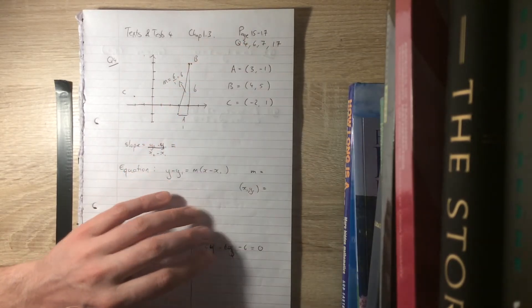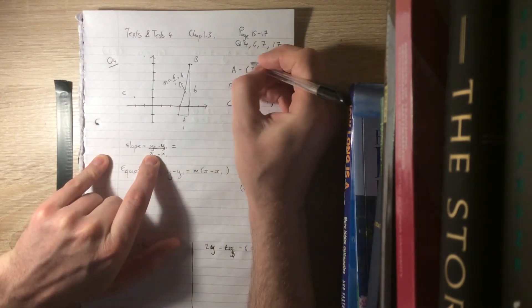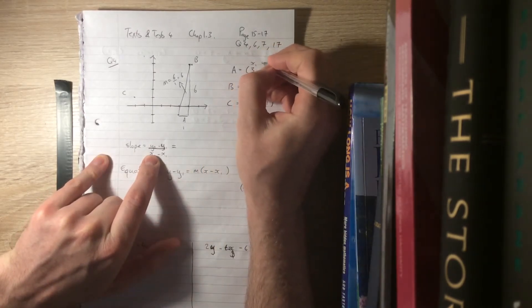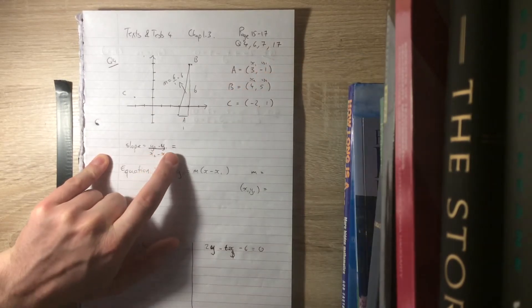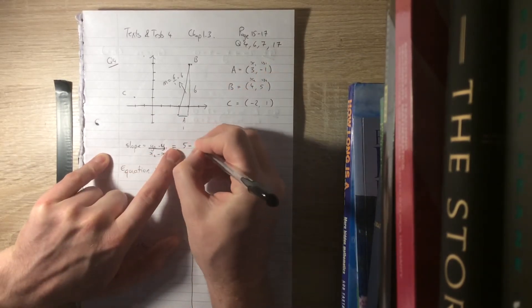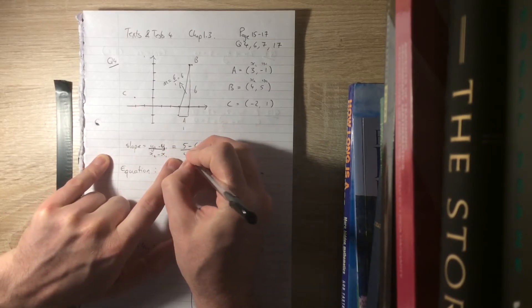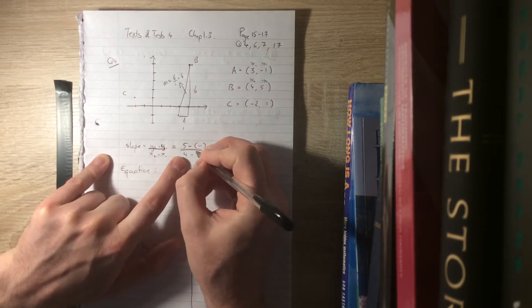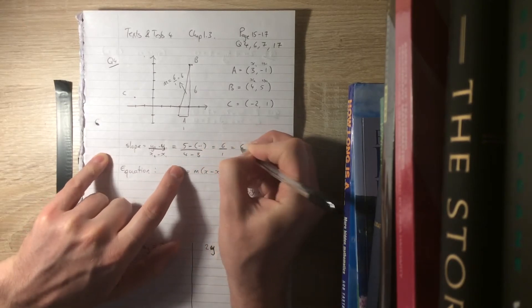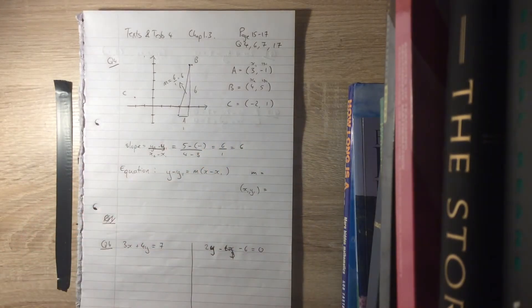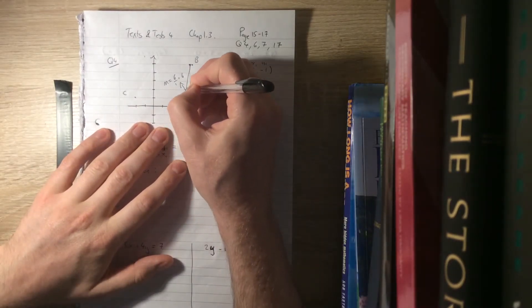Or using the formula: if you label points A and B as (x₁, y₁) and (x₂, y₂), you're going to say y₂ minus y₁ over x₂ minus x₁. That's going to give us 6 over 1 as well. Either way, the slope of that line is 6.